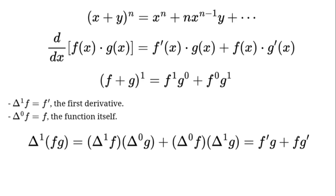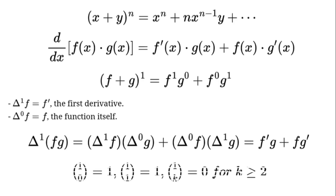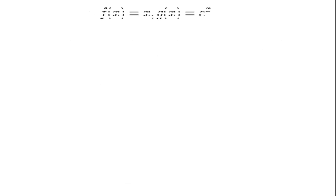The binomial coefficients — 1 choose 0 equals 1, 1 choose 1 equals 1, and 1 choose k equals 0 for k greater than or equal to 2 — make the series stop at two terms. Let's test it with f(x) equals x, g(x) equals e to the power of x.